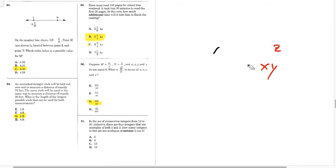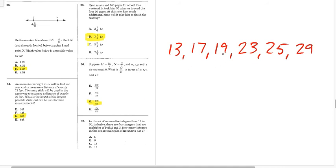97 now. Consider integers from 12 to 30, how many are not divisible by 2 or 3? Okay. So, 12, no. 13, yes. 14, no. 15, no. 16, no. 17, yes. 18, no. 19, yes. 20, no. 21, no. 22, no. 23, yes. 24, no. 25, yes. 26, no. 27, no. 28... 29 is good. And then we have 30, and we're done. So, 1, 2, 3, 4, 5, 6, which is B. 97 is B.